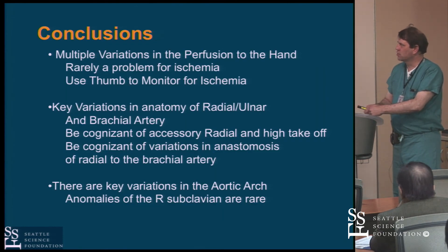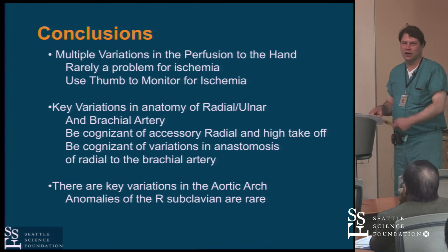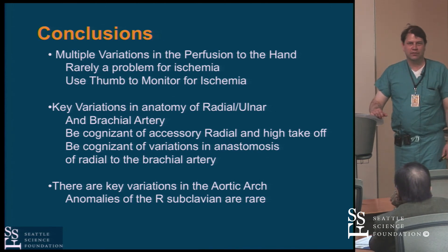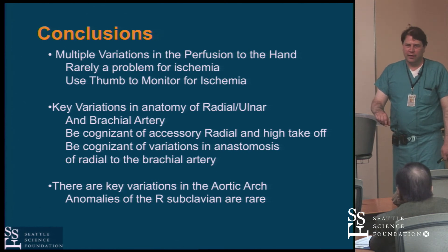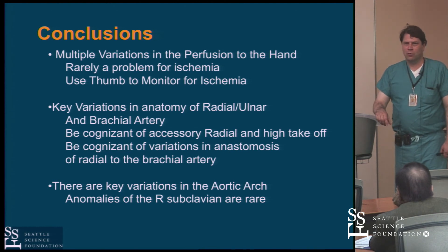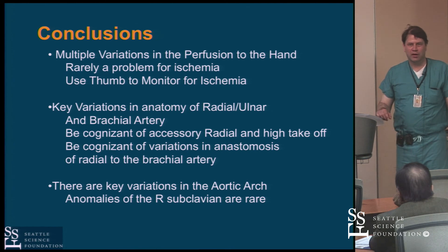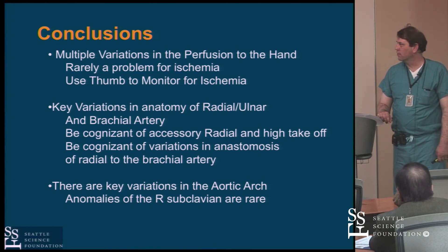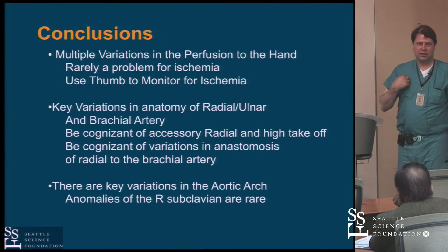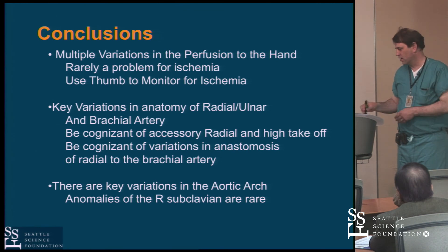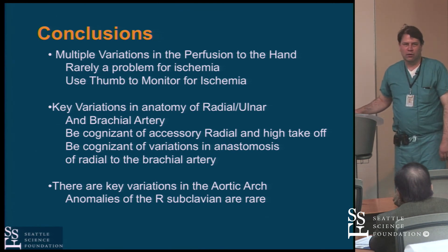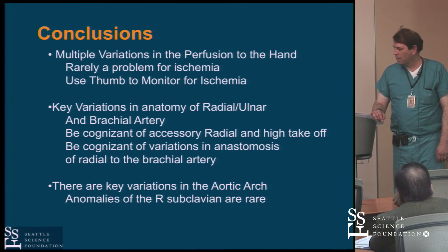In conclusion, there are a lot of variations in the hand. Nowadays we really aren't paying much attention to the Allen's test, even with the most extremely abnormal result. There are variations in ulnar and radial anatomy. It's important to be aware of what's going on at the elbow so when you shoot your angiogram you know what to expect. Finally, the aberrant subclavian coming off the descending aorta — the so-called bovine arch — can be problematic when negotiating from the right wrist.